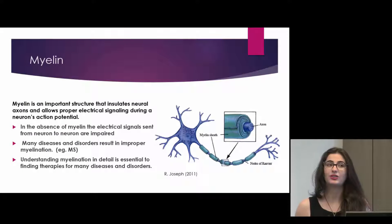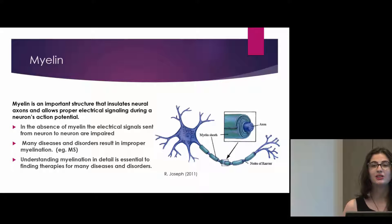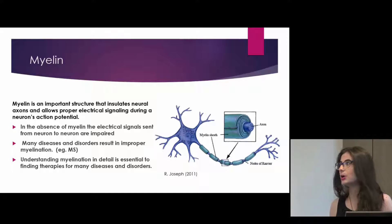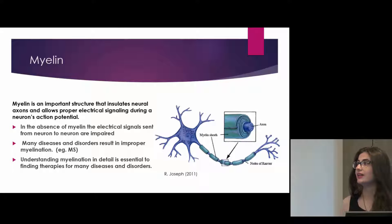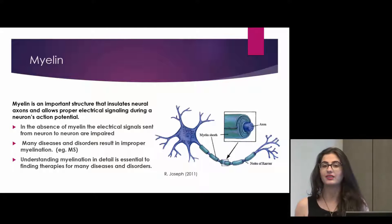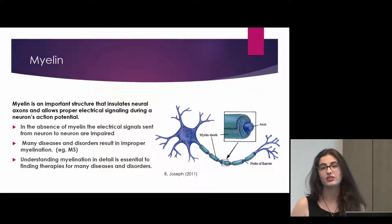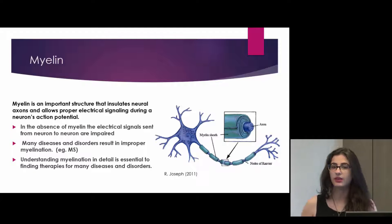Myelin is an important cell structure that insulates neural axons and allows for saltatory conduction down the axon during an action potential. You can think of it as the rubber coating on a copper wire in simple terms. In the absence of myelin, the electrical signals sent down the axon are impaired, and many diseases and disorders result from improper myelination. So understanding myelination is really important for understanding what happens when it goes wrong and how we may remedy that.